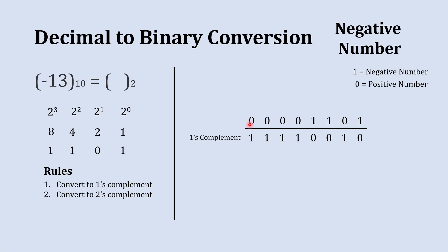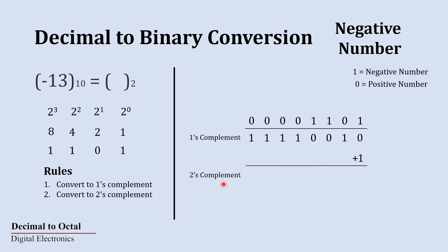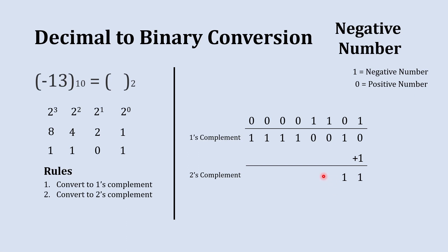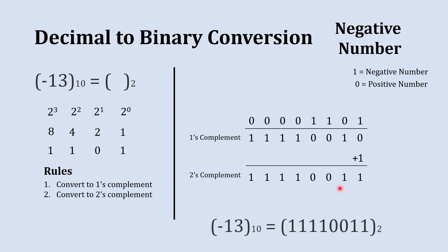Now we'll go for 2's complement. In order to get 2's complement, we're supposed to add plus 1 to the 1's complement, and whatever answer we get will become our 2's complement. So we add plus 1 to this number: it becomes 1, this one stays as it is, and the remaining number stays as it is. This is our 2's complement representation, and this number is the binary equivalent to negative 13.